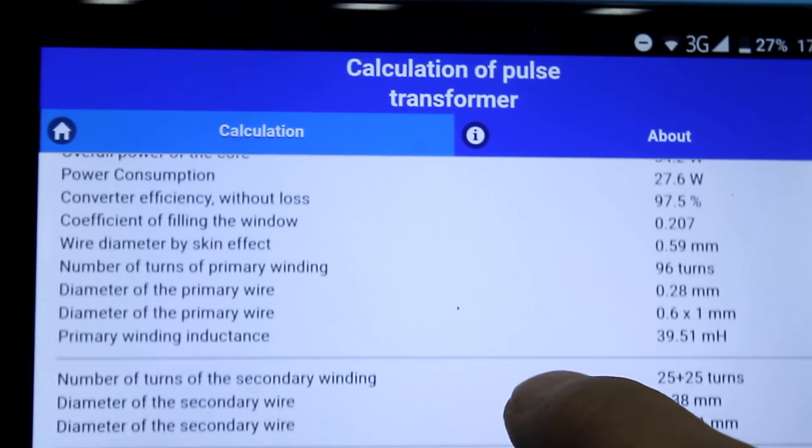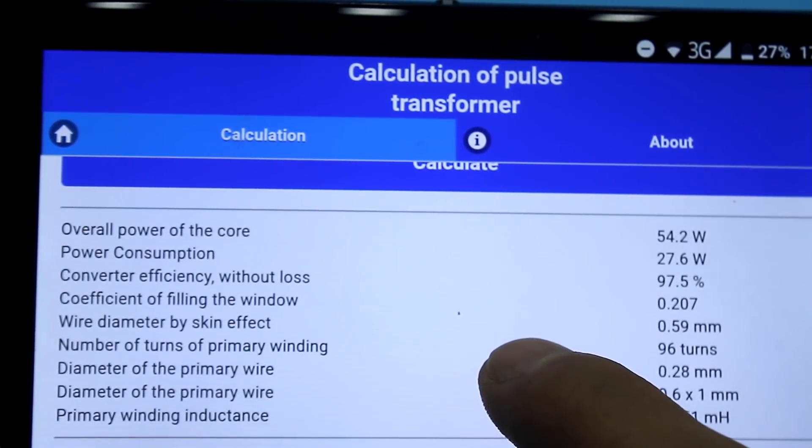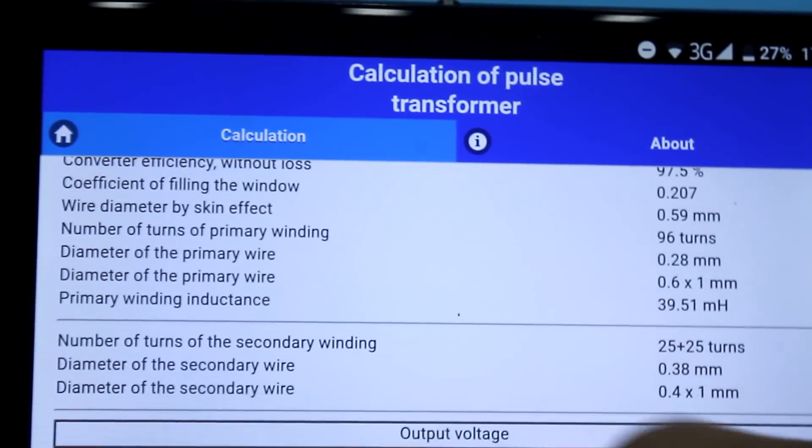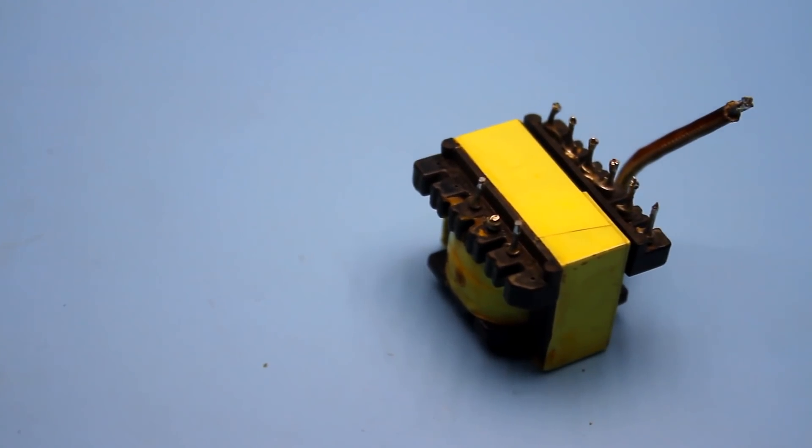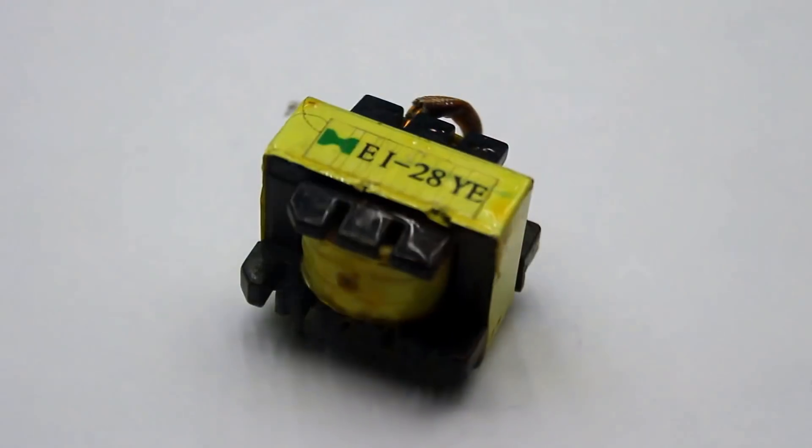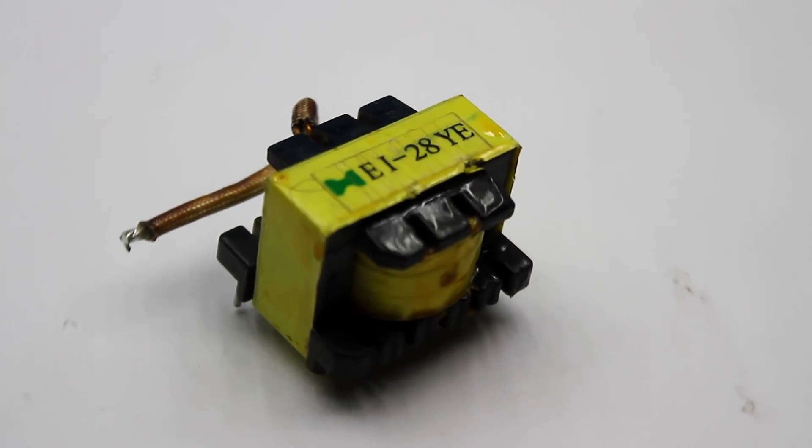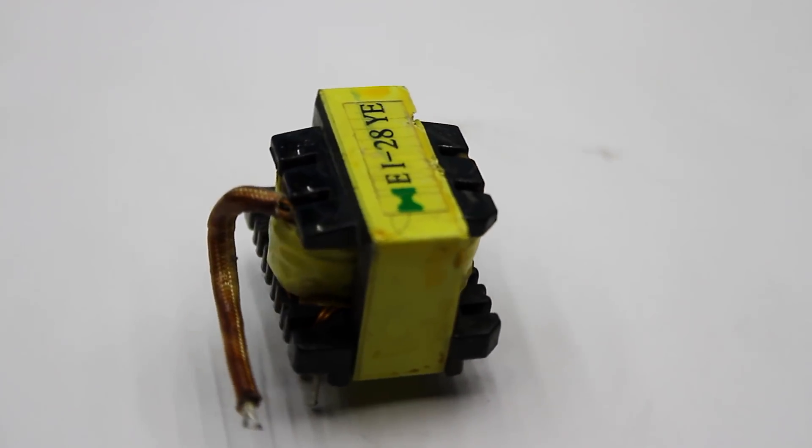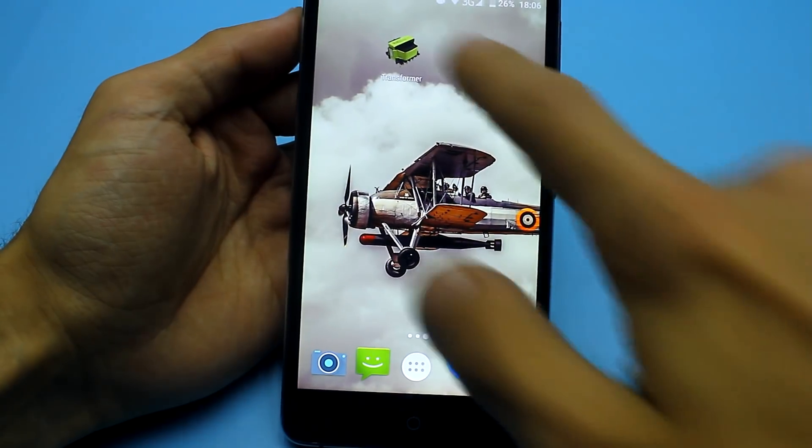In my case, the overall power of the core is about 60 watts, in spite of the fact that it was taken from a computer power unit. Of course, you can get more power, but it will already be a non-standard mode for such a core.